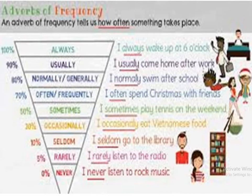So the words like always, usually, normally, often, sometimes, occasionally, seldom, rarely, and never — these are the adverbs of frequency. These tell us how frequently, or how many times, something is happening.